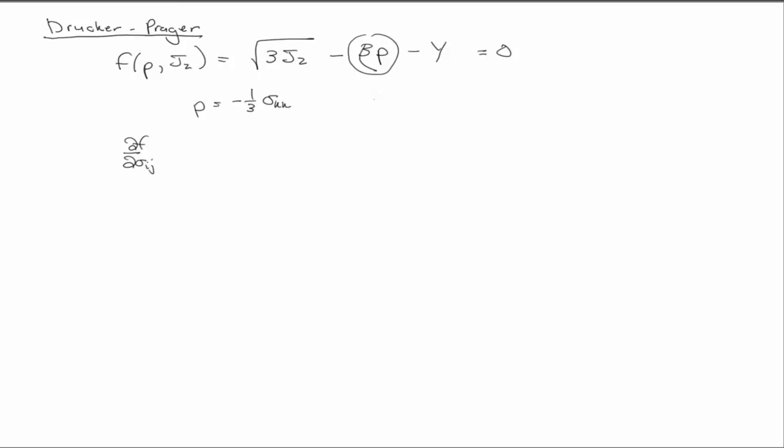So if we actually just compute this, it'll be beta because it's a constant, partial P partial sigma IJ. And so that's partial partial sigma IJ minus one-third sigma KK. That's minus one-third—I'm sorry, delta IK, delta JK. So that's one-third delta IJ.